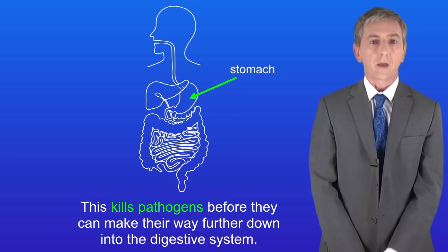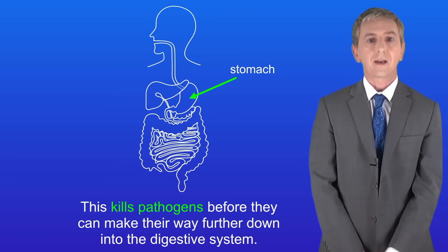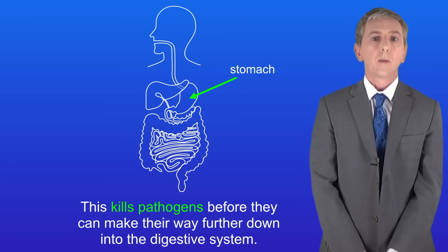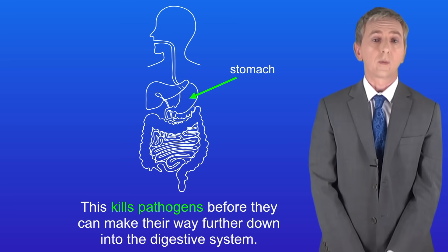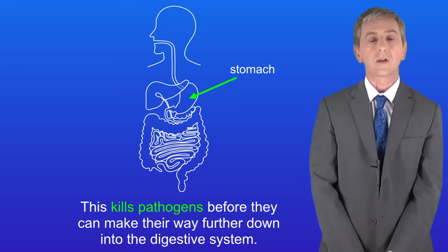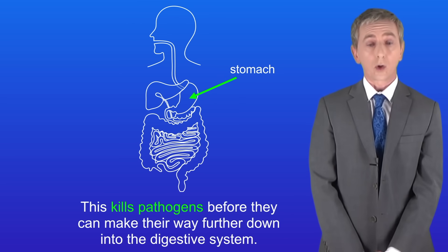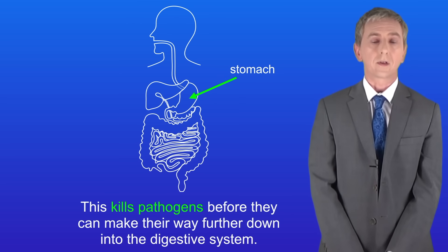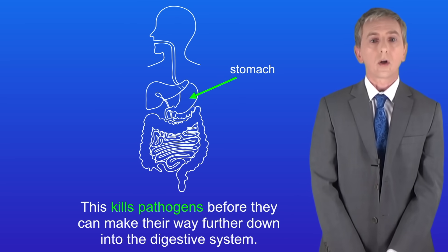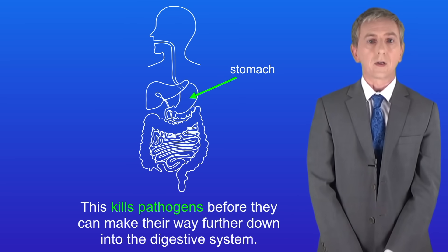Now I should point out that even with all these non-specific defence systems, pathogens can still get into the human body and cause serious disease. So to protect us we also have the immune system, and we're going to look at that in our next video.